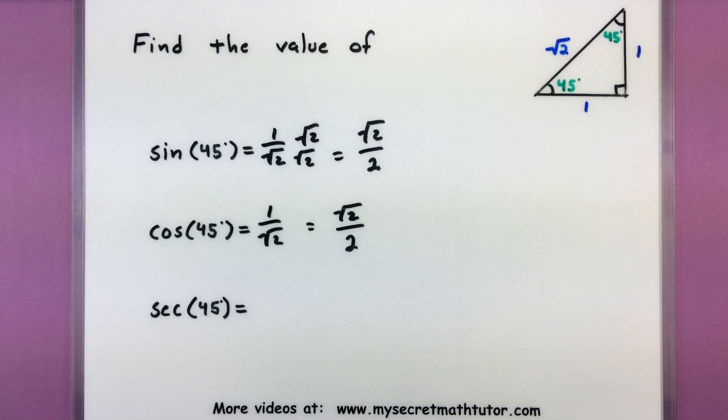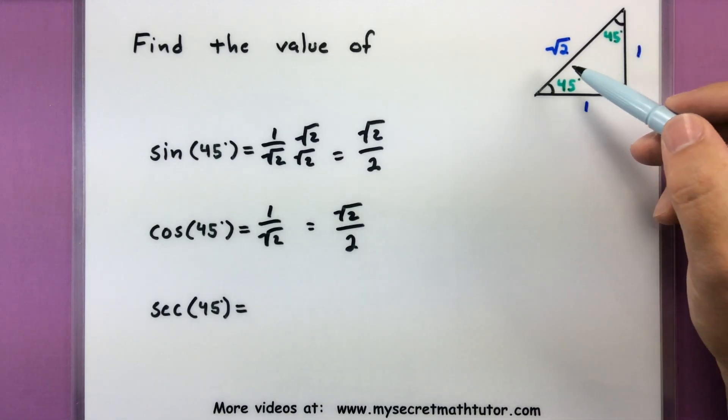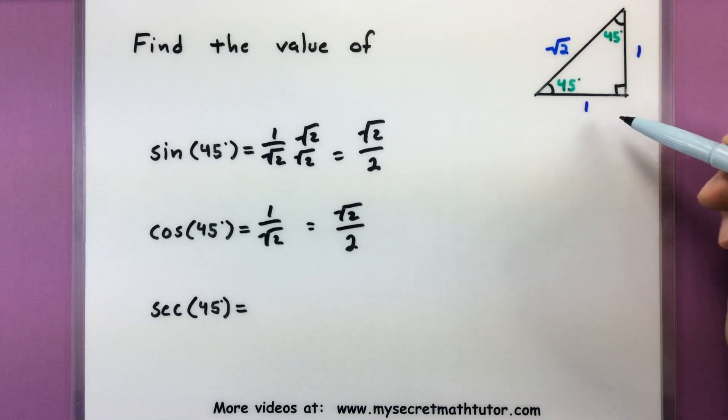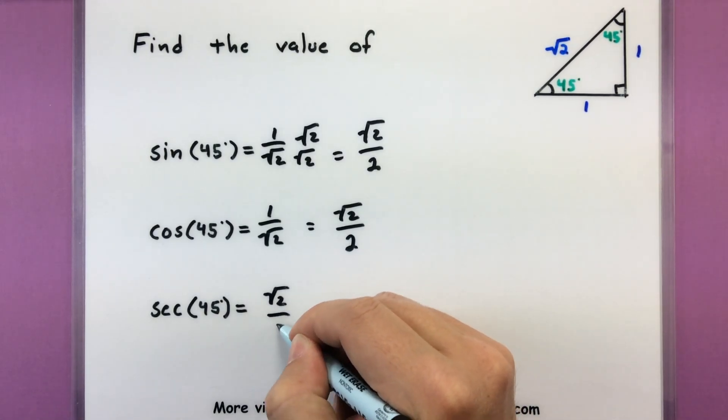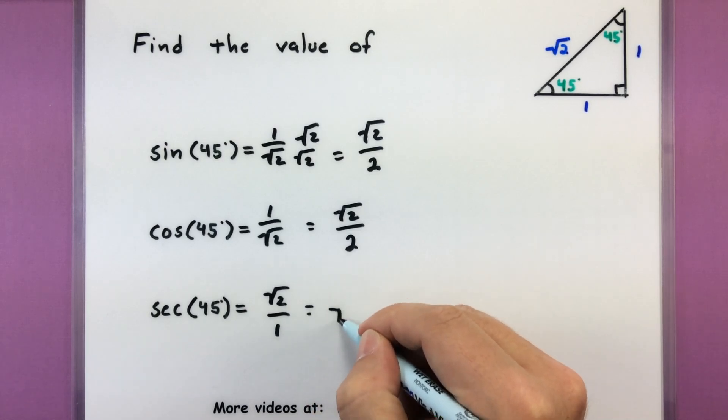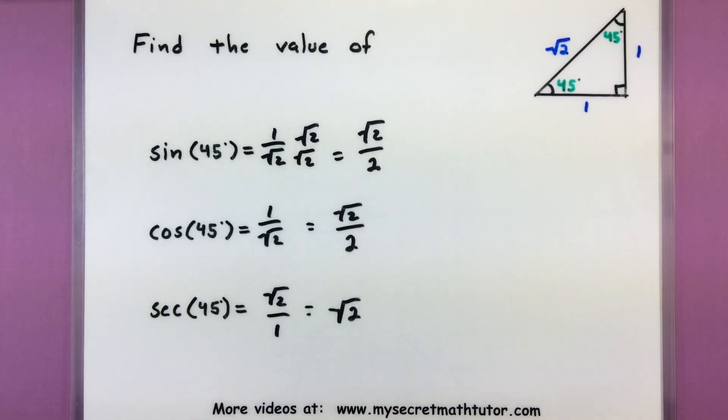All right, one last one. Secant of 45 degrees. That's our hypotenuse over the adjacent side. So hypotenuse over the adjacent, or just the square root of 2. Not bad.